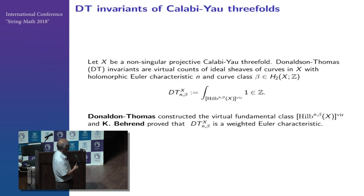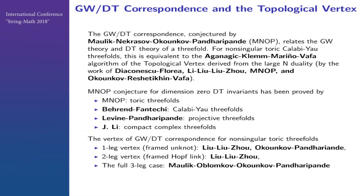At the same time, in the last 10 years, there was development by Donaldson and Thomas. Their theory counts ideal sheaves of curves in X. They defined such a thing where they define what the virtual fundamental class is. They proved this is a very nice, useful theory. The whole thing was trying to relate the Gromov-Witten invariants to the Donaldson-Thomas invariants. This whole theory was developed by many important people, including the topological vertex proposed by these four people here.